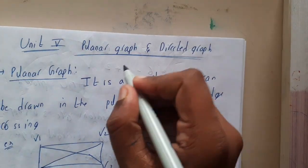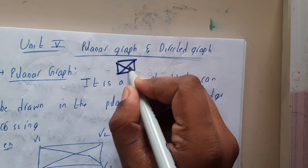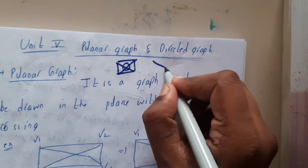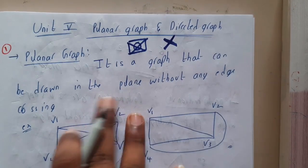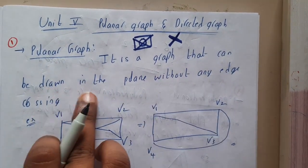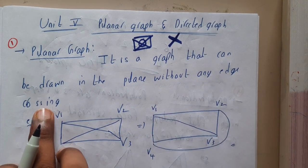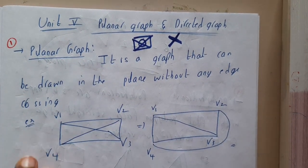You might be having a doubt about what is this crossing of edges. So if you draw this, here the edges are crossed, right? So in this way, this is a crossing of edge. It is a graph that can be drawn in the plane without any edge crossing, which is nothing but a planar graph.